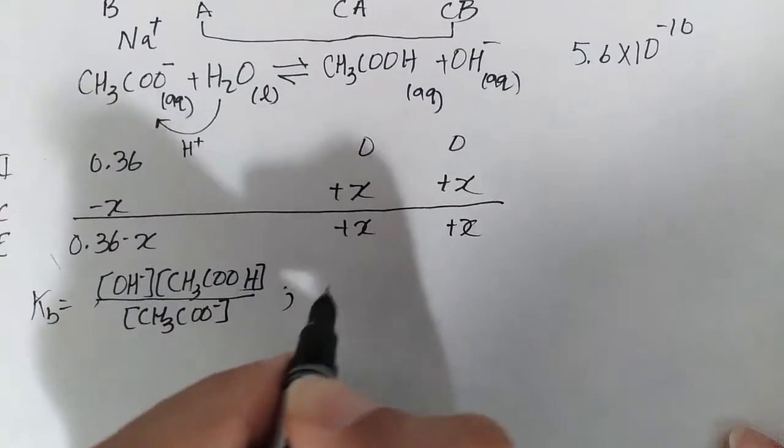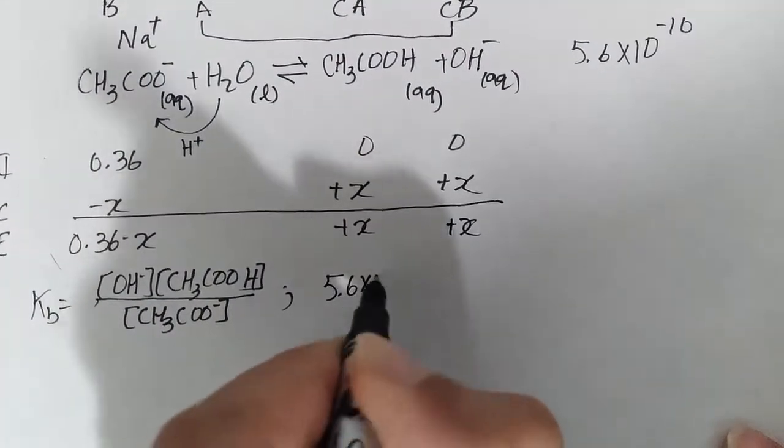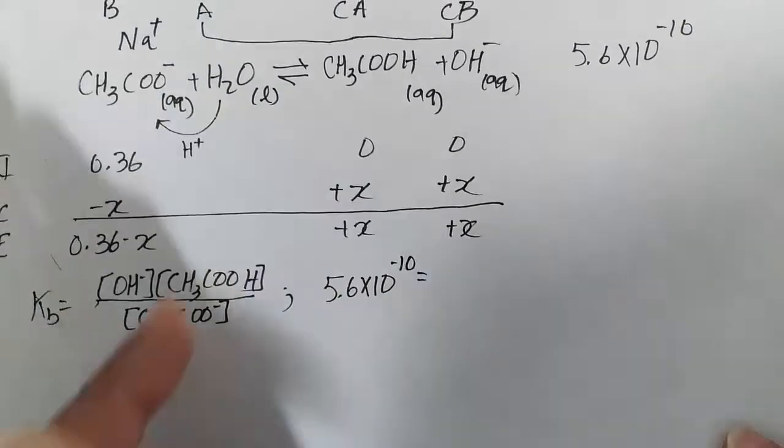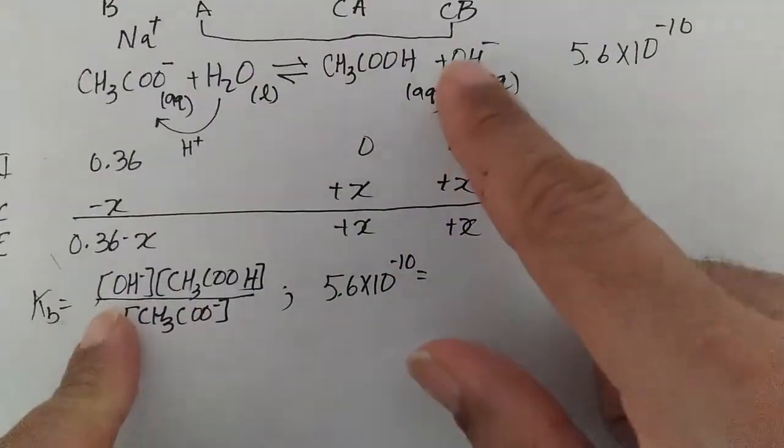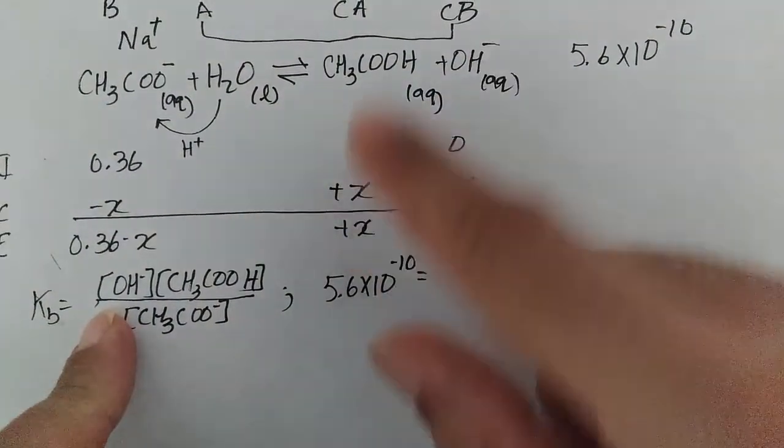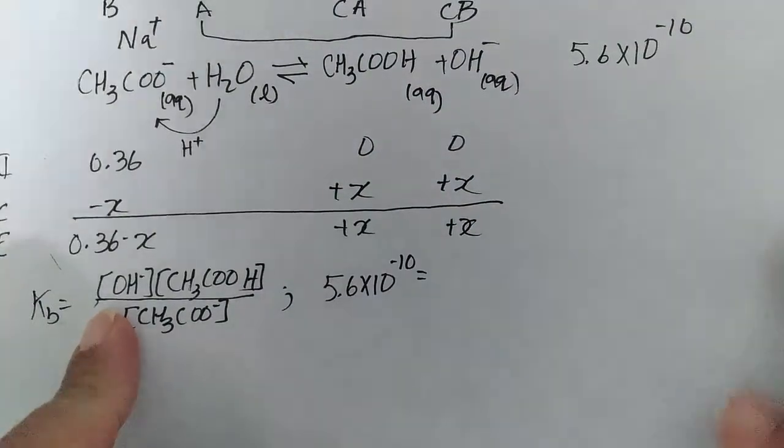5.6 times 10 to the minus 10 is going to equal OH-, which is x, times acetic acid, which is x. So x times x is x squared.